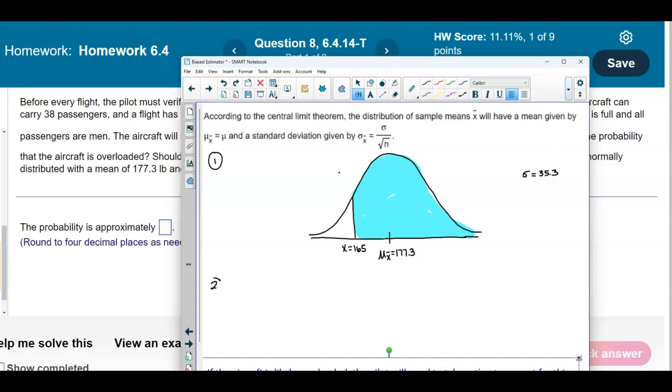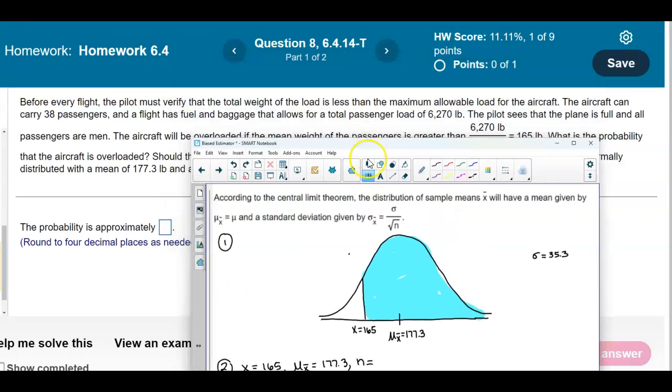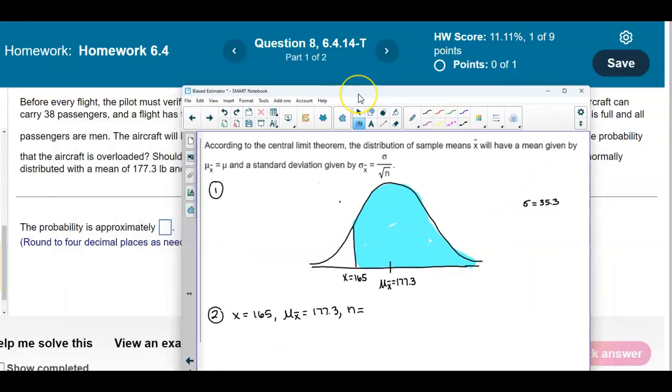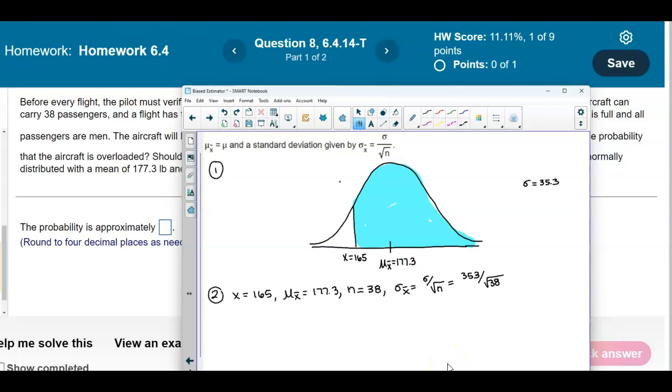Now we want to find that z-score. We want to write down the given information. We know that x equals 165, the mean of the sample means is 177.3, the value of n is 38 passengers, and the standard deviation of the sample means equals the standard deviation divided by the square root of n, so we have 35.3 divided by the square root of 38.